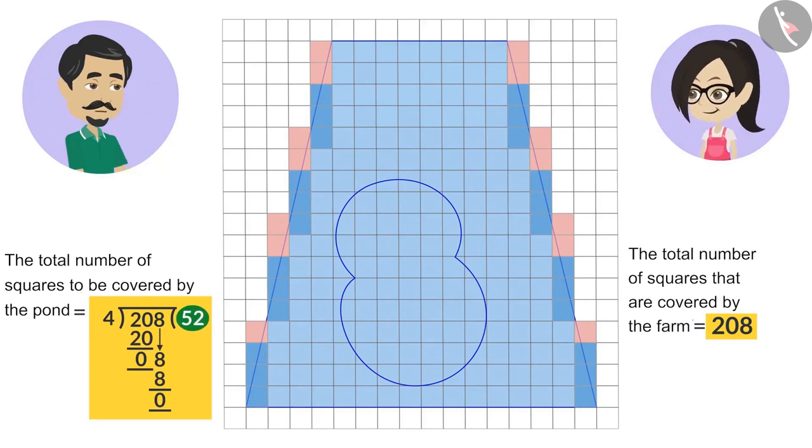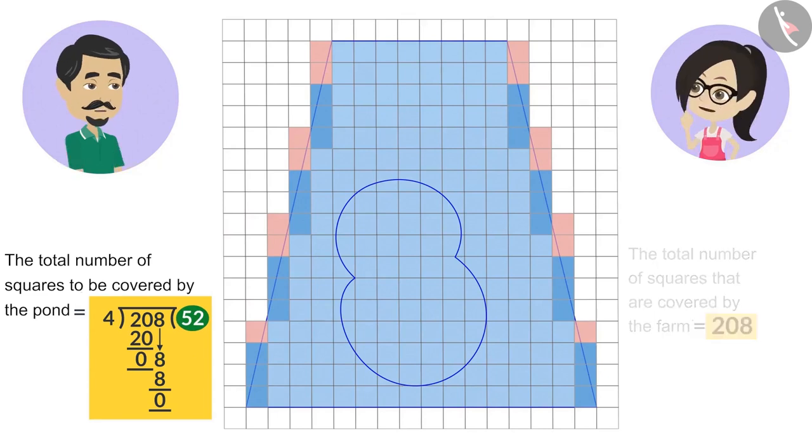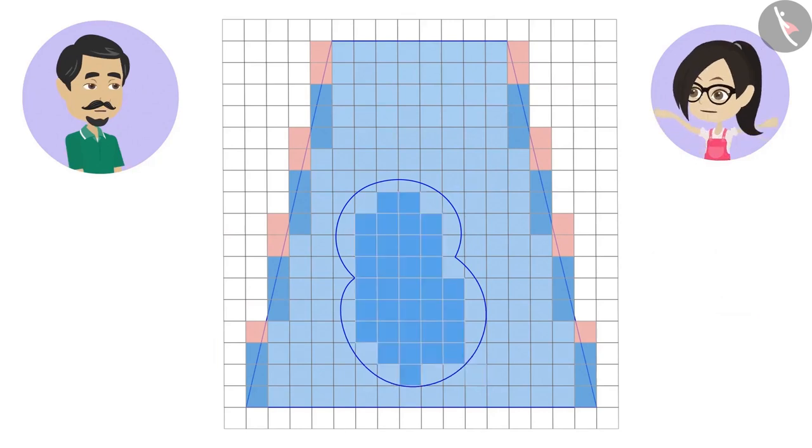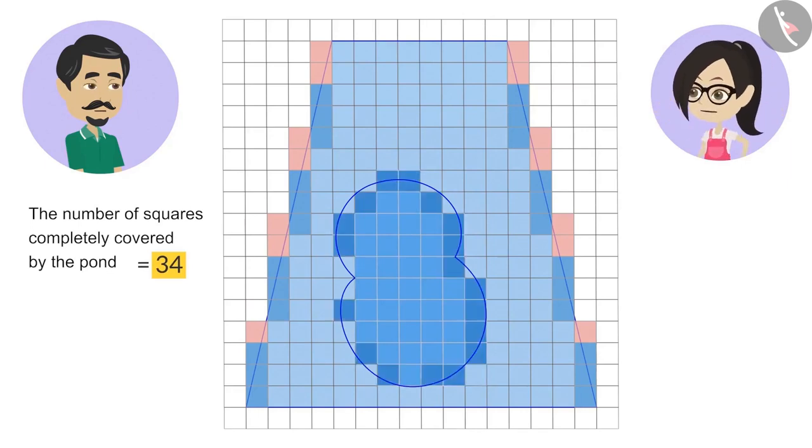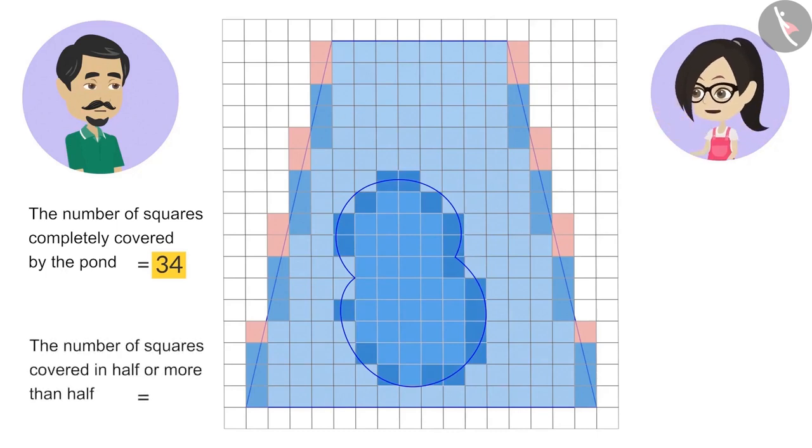Yes, you are absolutely right. Now, we will count the squares covered by this pond. The number of squares that are covered completely is 34. Now, we will count the squares that are covered in half or more than half. Their number is 18.